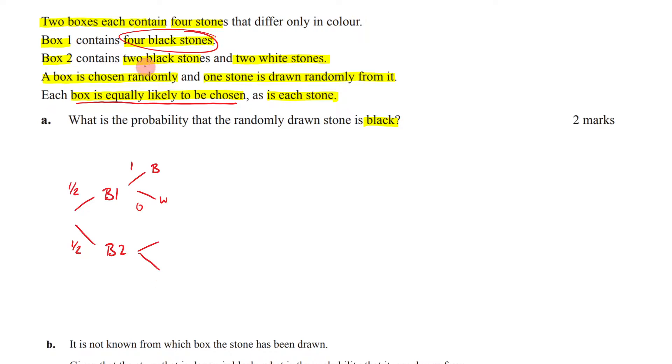Then for box two, you've been told that there are two black stones and two white stones. So that means there is a 50% chance that you're going to get a black one, and there is a 50% chance you're going to get a white one.